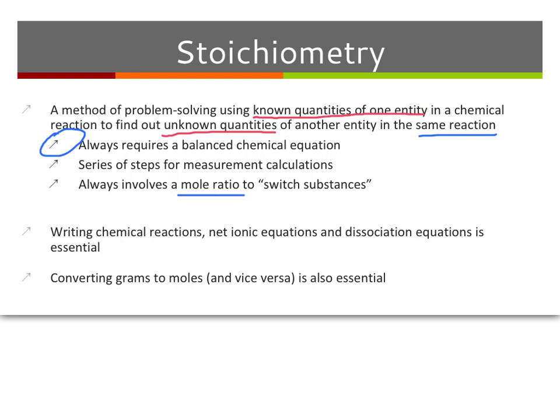It's going to take a series of steps for us to do this. What you will need as base knowledge is you need to know chemical reactions, your balanced chemical reaction. From quiz number one, net ionic equations — you'll need to know what's happening when you dissociate or ionize an acid or a base — and being able to convert from grams to moles and moles to grams, which means using your molar mass.